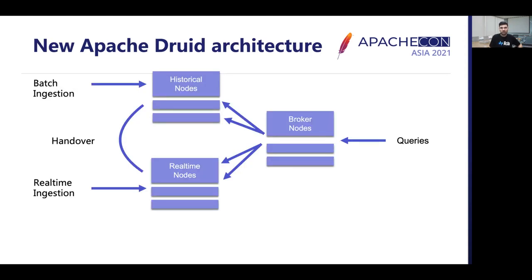Here is the improvement made to the architecture to provide real-time insights into data in motion. A new set of nodes called real-time nodes — later replaced by real-time indexing tasks — were added. Real-time nodes did three tasks: first, they handled real-time ingestion by adding support for push and pull-based ingestion from streaming sources. Second, they handled queries over real-time data to make data queryable as soon as it is ingested, solving the problem of data freshness. Third, periodic handoff of data — real-time nodes stored data in a write-optimized data structure on heap, then periodically converted it into read-optimized, time-partitioned, immutable segments and handed them over to the historical nodes.